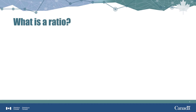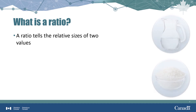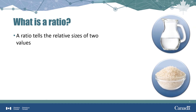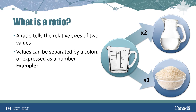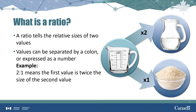Now let's move on to ratios. A ratio tells us the relative size of two values. The difference between a proportion and a ratio is that with ratios, you have more freedom to compare. The notation is also different — while ratios can be expressed as numbers or percentages, they are most commonly expressed with a colon. A ratio of 2:1 means the first value is twice as large as the second. A ratio of 3:2 means that for every 3 of the first item, there are 2 of the second.